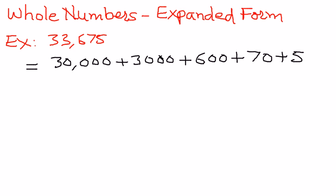So we wrote it out as 10,000, then 1,000, then 100's, then 10's, and then 1's. When we add them up, 30,000 plus 3,000 plus 600 plus 70 plus 5 will be equal to 33,675.